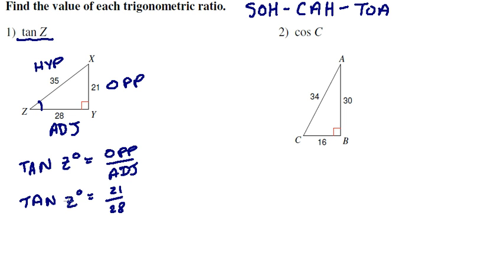Now this is where we get into our inverse ratios. So to get Z by itself, like we'd normally do in algebra, we need to do the opposite of whatever is being done. So the opposite of tangent is taking the inverse tangent. So I'll rewrite that here. So tangent to the negative 1 of the tangent of Z.